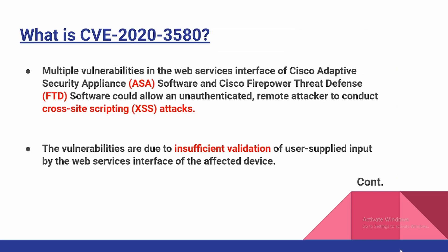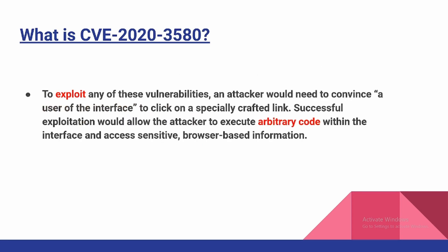So what is CVE-2020-3580? Back in October 2020, multiple vulnerabilities in the web services interface of Cisco ASA and Cisco FTD software would allow an unauthenticated remote attacker to conduct cross-site scripting attacks. The vulnerabilities arise mostly due to insufficient validation of user-supplied input by the web services interface of the affected device. To exploit any of this, an attacker would need to convince a user of the interface to click on a specially crafted link.